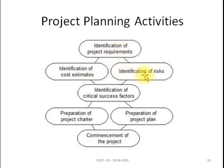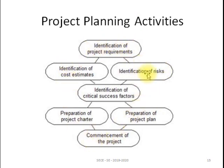Based on the requirements we estimate cost and estimate risk, from which we identify the critical success factor — whether our project will have success or not. After identifying this, we prepare the project charter, which is the timeline of the project completion: the starting date, ending date, and delivery date of the project. Each task has a separate starting and ending date. We then prepare the final project plan and commence the project. These are all the activities performed in project planning.